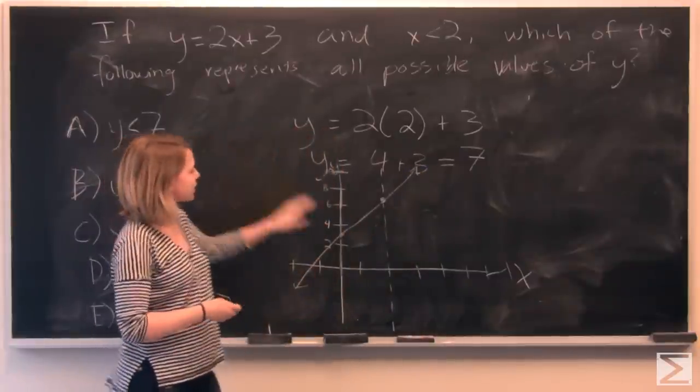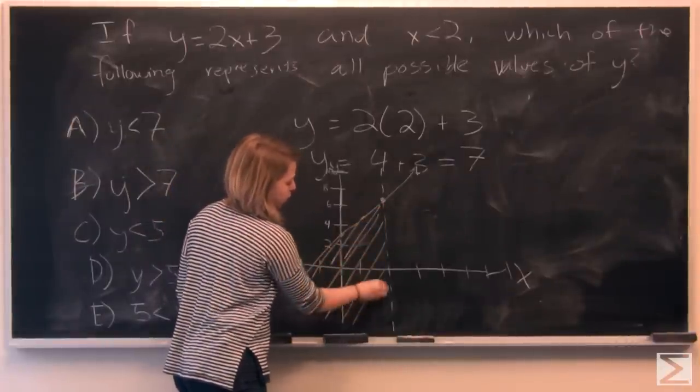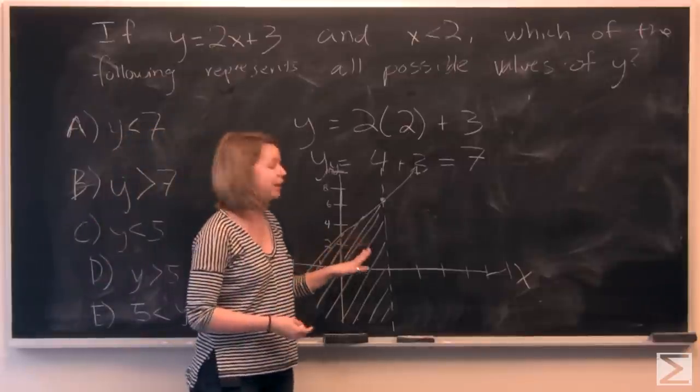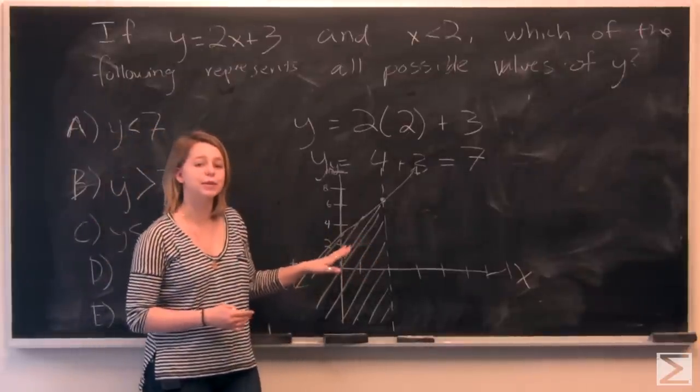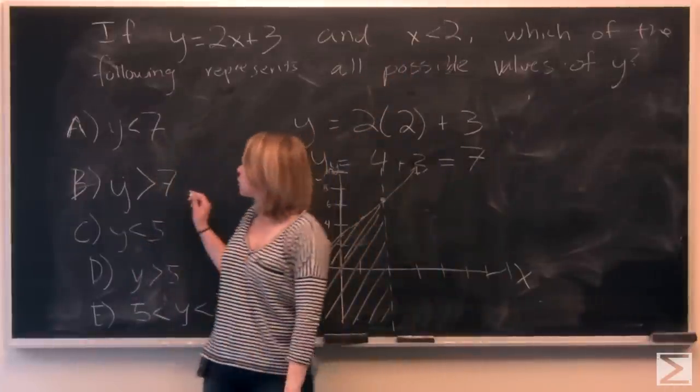And so when x is less than 2, it covers all of these possible values for y. And that shows us pretty clearly that y is always going to be less than 7 when x is less than 2. So our answer is A.